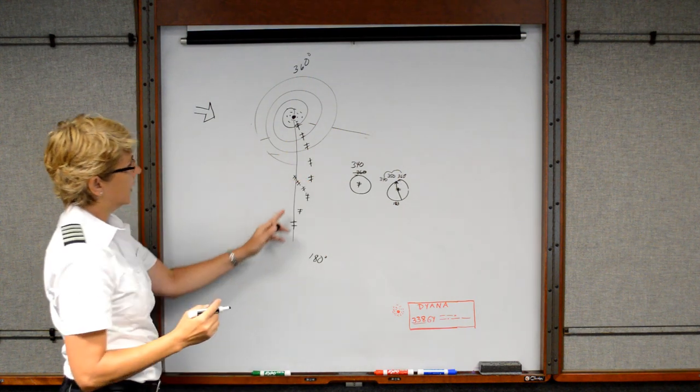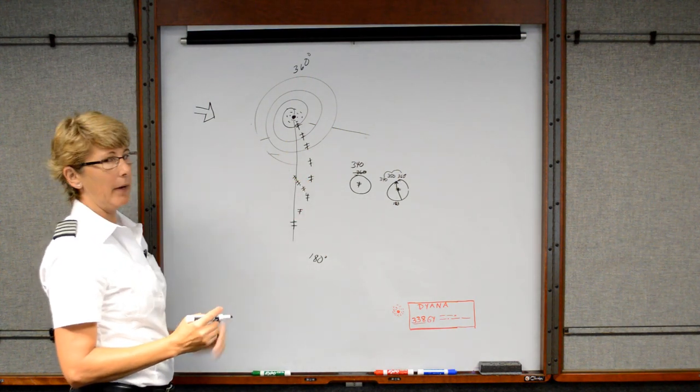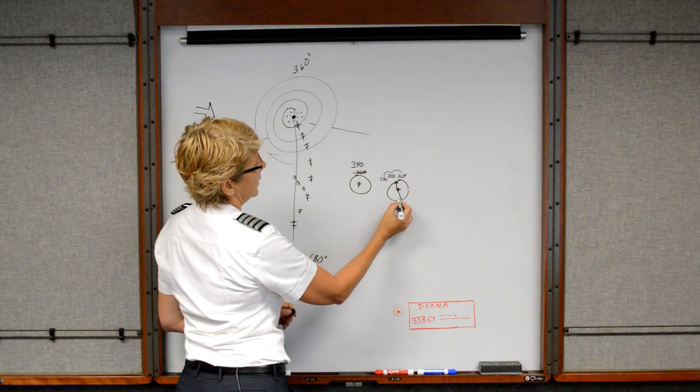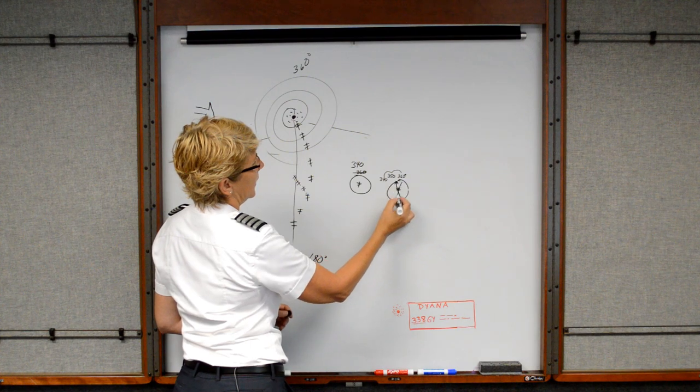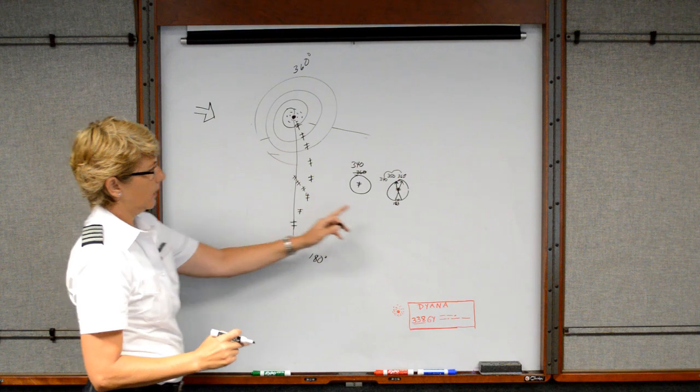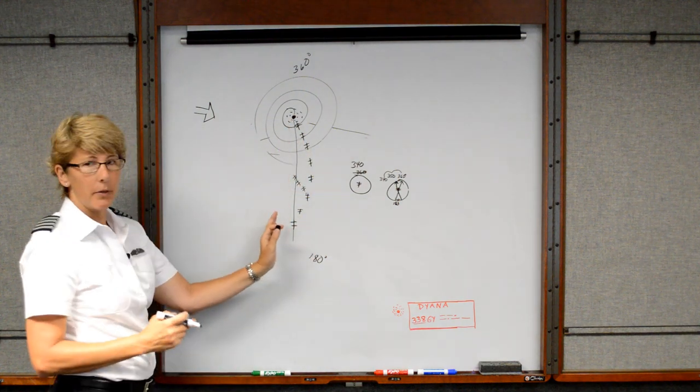Now, how do I know when I arrive back on the bearing that I wanted to be on? It's because the tail of the needle is going to correct and end up back on the 180, because the tail of the needle actually shows my position.